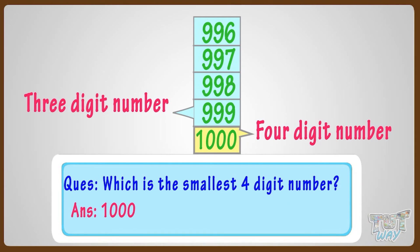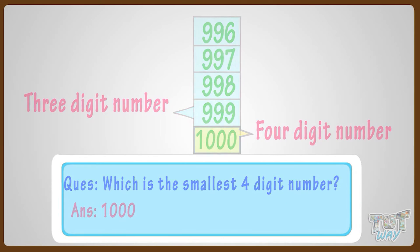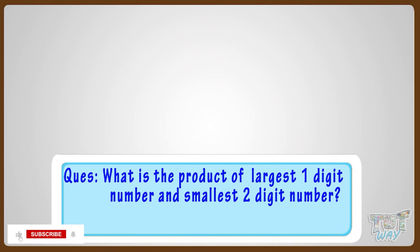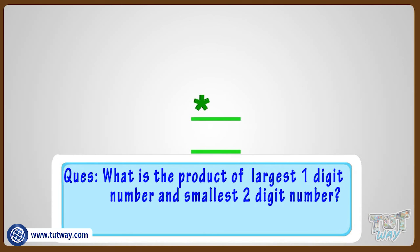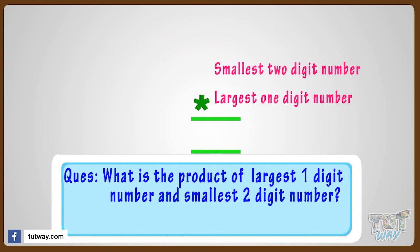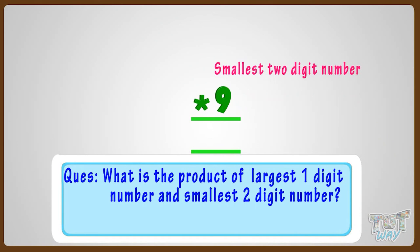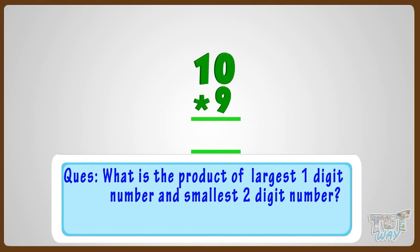What is the product of the largest one-digit number and the smallest two-digit number? Let's find it out. We need to multiply the numbers. The largest one-digit number is 9, and the smallest two-digit number is 10. So multiply 9 and 10, and we get 90. So 90 is the answer.